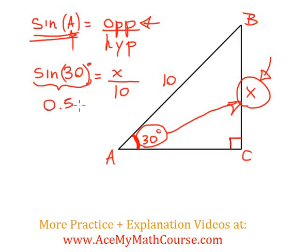So 0.5, or half, is equal to x over 10. We just want to solve for x. What I can do is multiply both sides by 10.